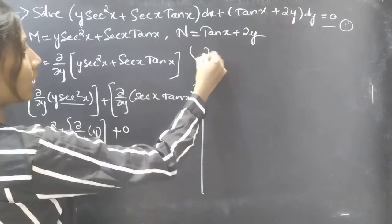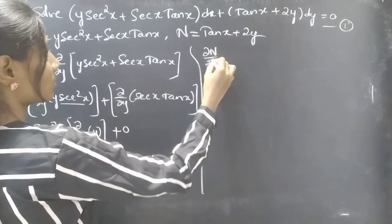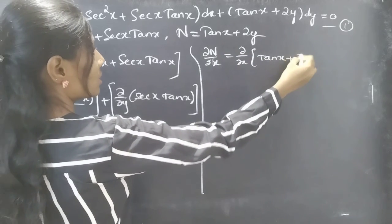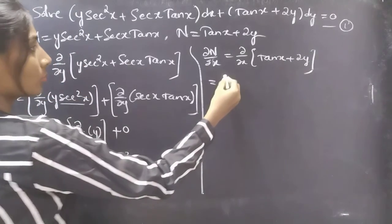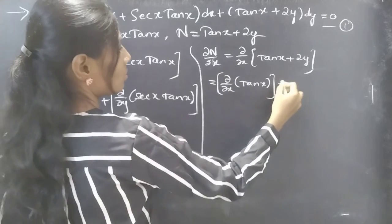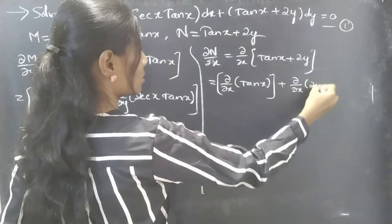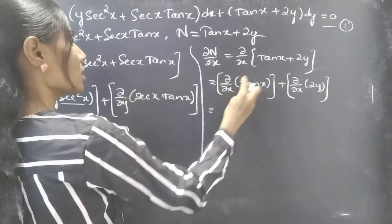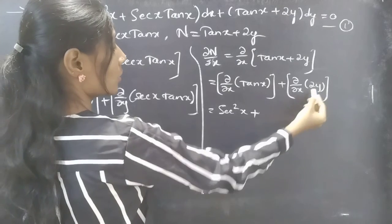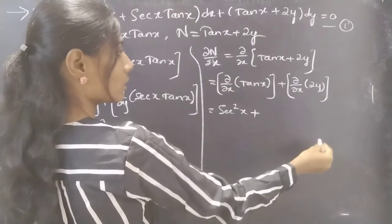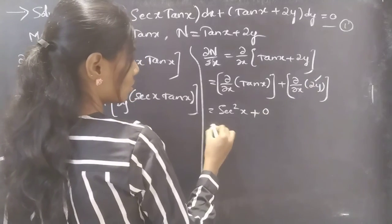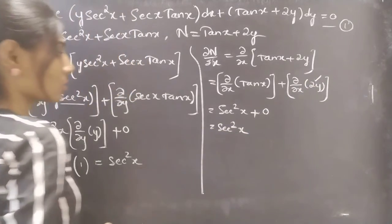Now let's find the partial derivative of N with respect to x: ∂/∂x of (tan x plus 2y). We can write this as ∂/∂x of tan x plus ∂/∂x of 2y. The partial derivative of tan x with respect to x is secant square x. Since y is treated as constant, 2y is constant, so its partial derivative with respect to x is 0. We get secant square x.